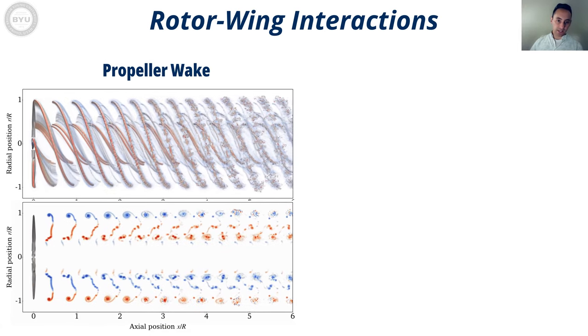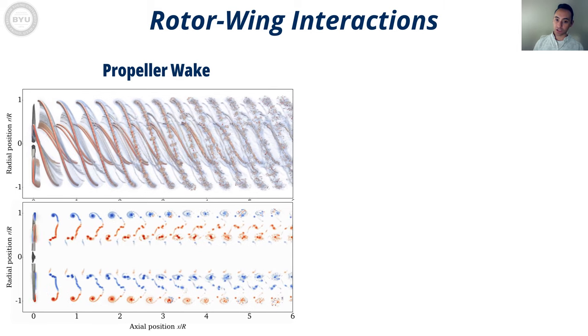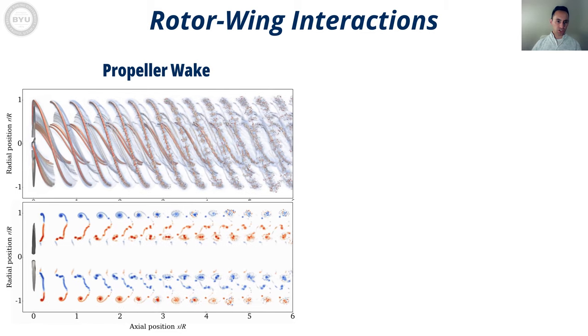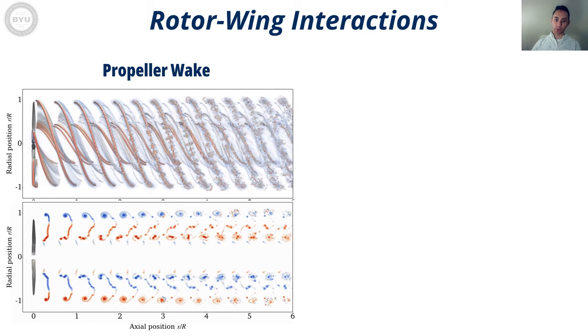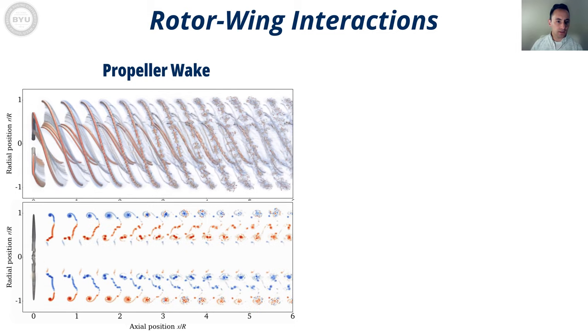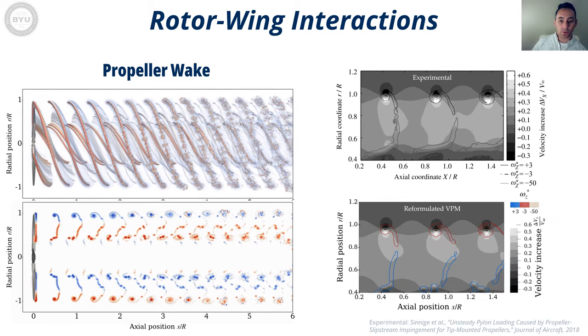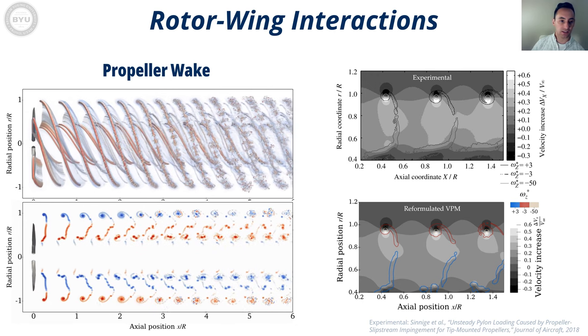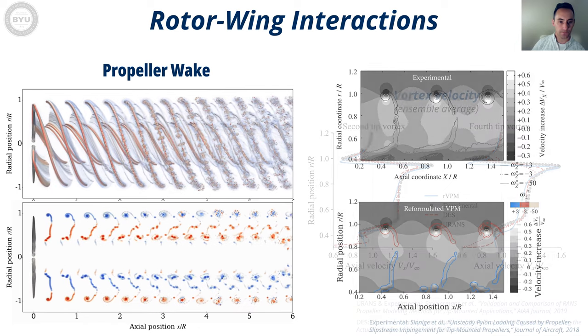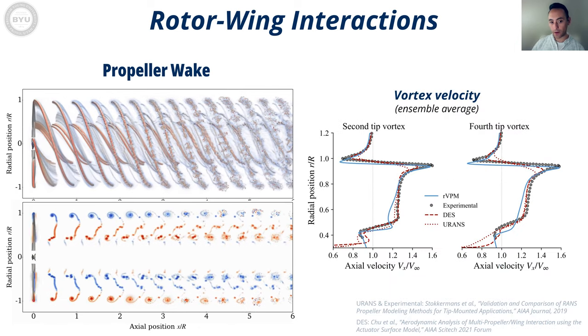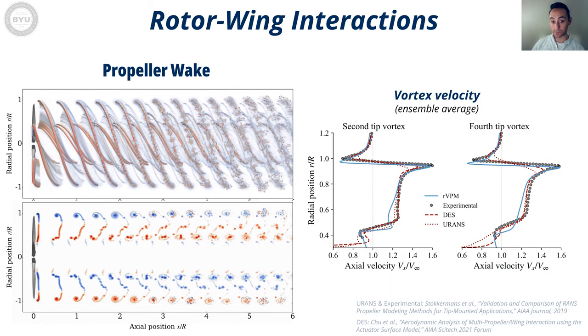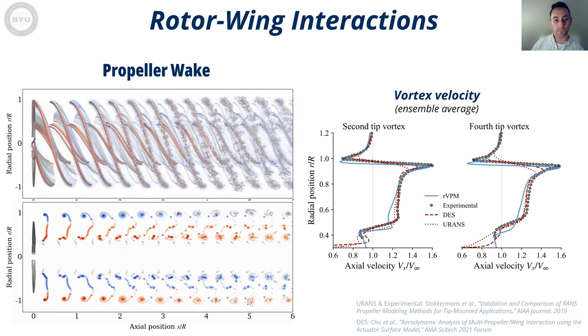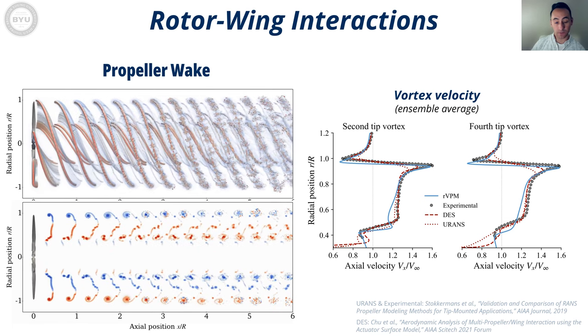In order to simulate the case of a rotor wake impinging on a wing, first we need to make sure that the wake of the rotor is accurate, so we did extensive validation on the propeller wake. We validated the structure of the wake compared to experimental PIV reported in the literature, finding excellent agreement. We also compared the velocity across tip vortices, finding that our meshless LES was able to fully resolve the tip vortex.